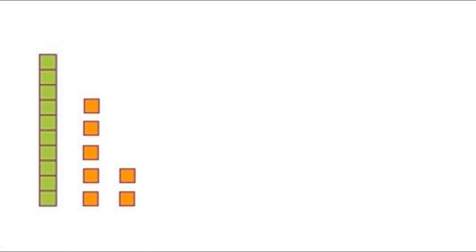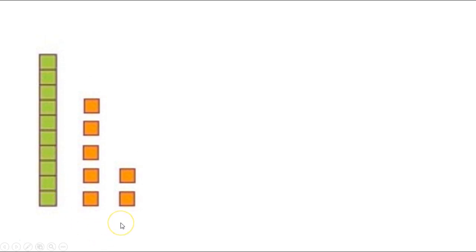Now, with knowing that this is a ten and this is a group of ten and that these are ones, we need to figure out how many we have all together here. So first, let's count how many tens we have. Looks like we only have one group of ten here, so let's write one.